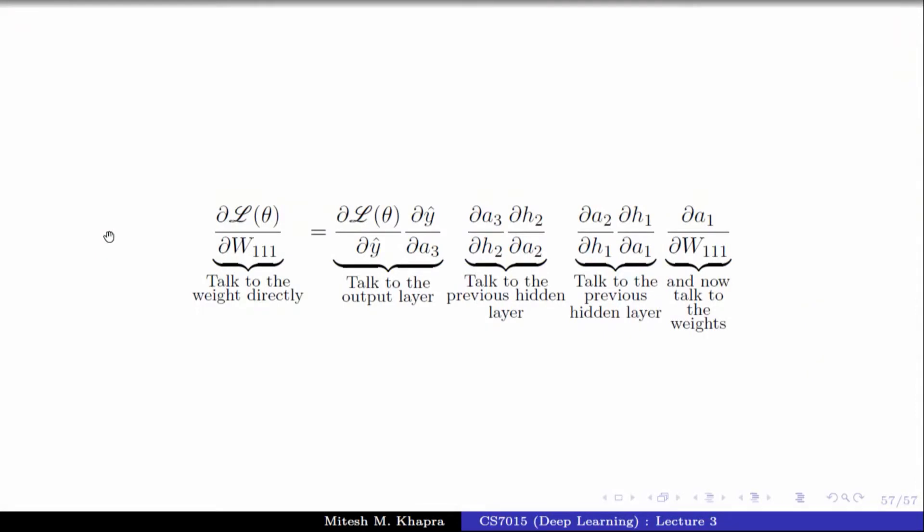You need to propagate the loss all the way back to the weights in your initial layers, or for that matter any layer in your deep neural network. So this propagation of error back is called backpropagation. The key is derivatives, and in particular you'll use the chain rule of derivatives. What you need to figure out is how to compute the derivatives with respect to the output layer, the hidden layers, and all the way back to the weights. Each of these quantities individually is easy to calculate because these are simple functions — not very deep composite functions. I have a set of derivations in my lecture notes where I compute each of these in detail.